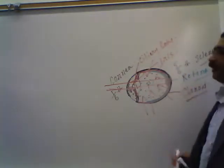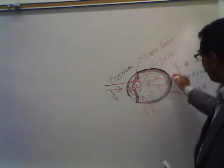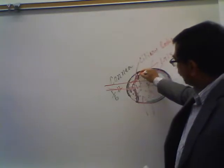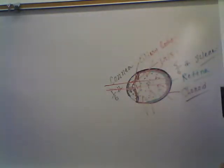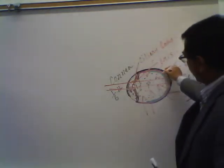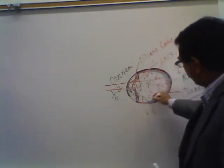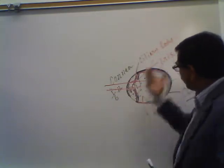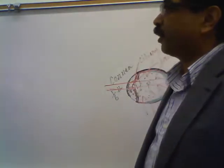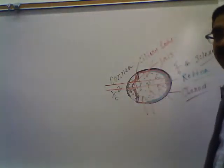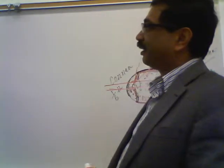The middle layer is the vascular layer, forming the choroid in the back, and the ciliary body and iris in the front. The innermost layer is the sensory layer — the retina — present only in the back part of the eye, where the photoreceptors and other important cells are present.